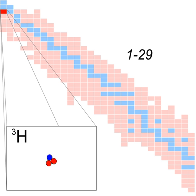The beta particles emitted by the radioactive decay of small amounts of tritium cause chemicals called phosphors to glow. This radioluminescence is used in self-powered lighting devices called betalights, which are used for night illumination of firearm sights, watches, exit signs, map lights, knives, and a variety of other devices. Tritium has replaced radioluminescent paint containing radium in this application, which can cause bone cancer and has been banned in most countries for decades. As of 2000, commercial demand for tritium is 400 grams per year and the cost is approximately $30,000 per gram.